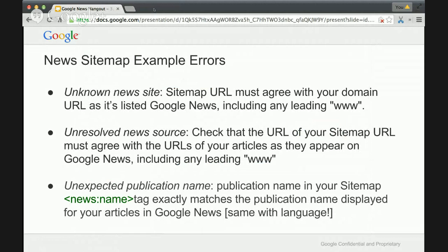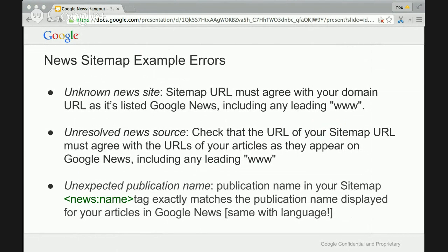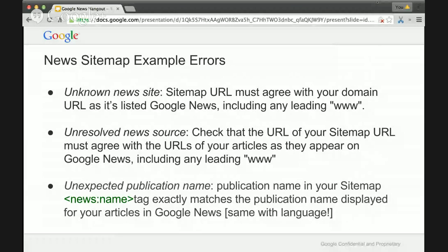Here are some of the most common errors publishers see. You'll sometimes get an 'unknown news site' error — this is often because you're hosting your sitemap on www.abc.com, but the domain in the Publisher Center doesn't have the 'www.' That mismatch will cause the unknown news site error. A second very common error is the 'unresolved news source' — all URLs, whether your sitemap URL and article URLs, must be consistent.